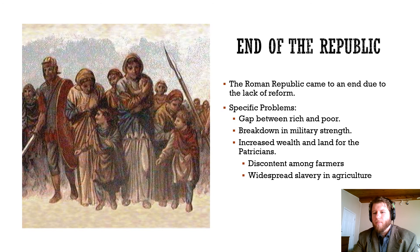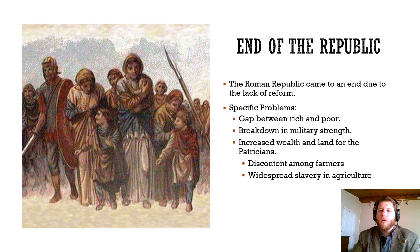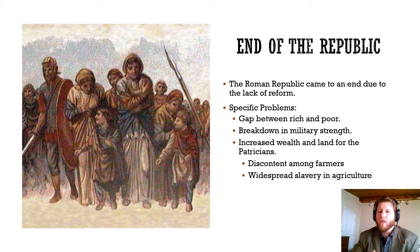The Roman Republic had been going on for a while — that last war ended in the 140s BC, when the Republic was already 350 years old, over 100 years longer than our country has been around. The Roman Republic comes to an end because they fail to reform — they don't change when changes are needed. There is a growing gap between the rich and the poor, the military starts to break down, troops become more loyal to their commanders than to the Republic itself, and there's an increase in wealth and land for the upper class, leading to farmers being upset.